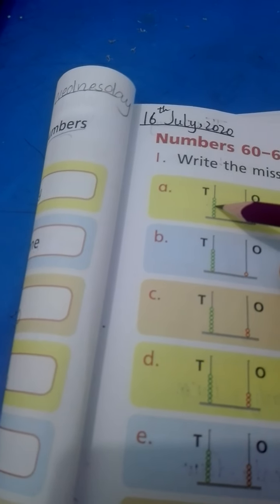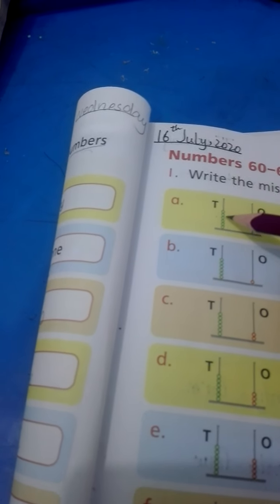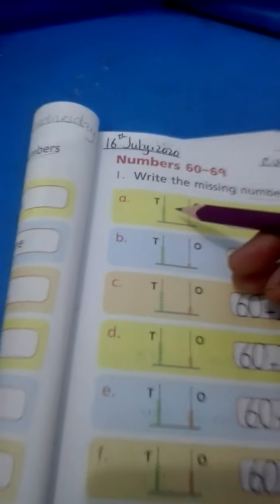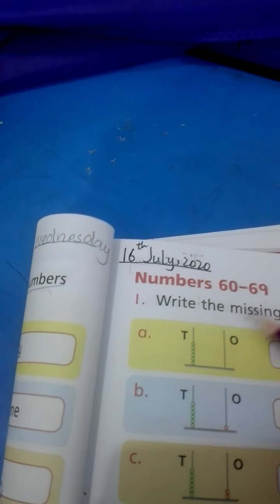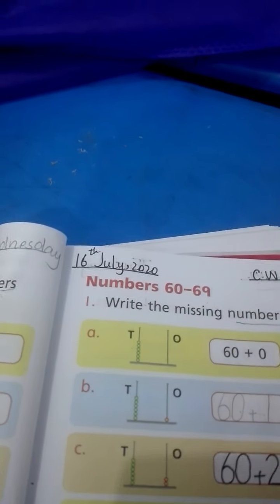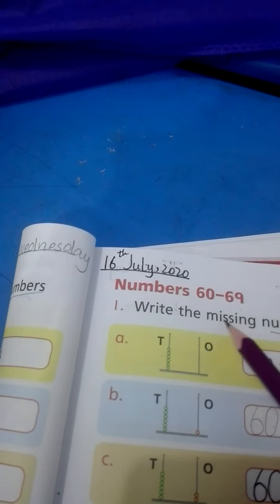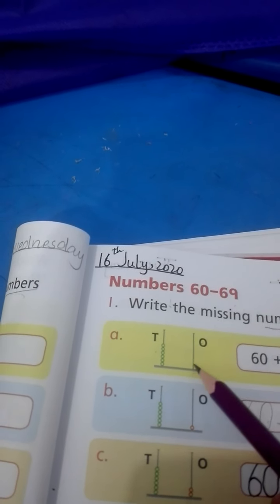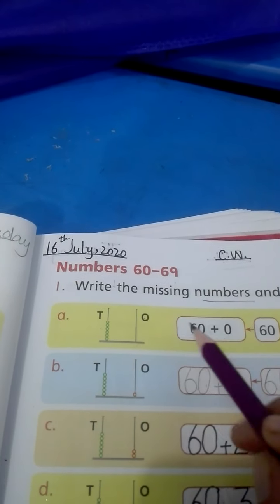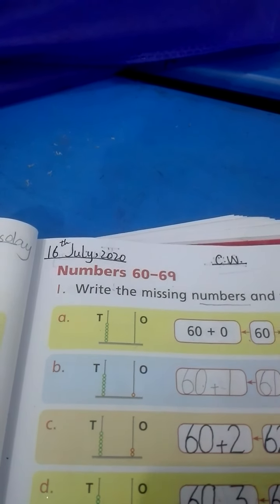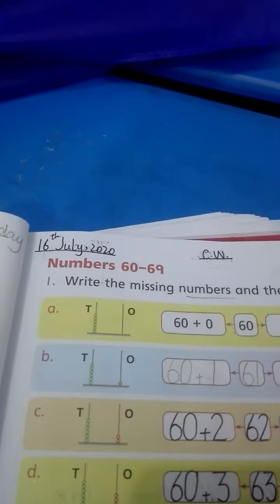In question A, T is for tens. We'll count the tens beads: 1, 2, 3, 4, 5, 6. Six beads are in tens, so we count by tens: 10, 20, 30, 40, 50, 60. Write 60 in numbers, add the addition sign. In ones there are no beads, so we write 0. 60 plus 0 equals 60.